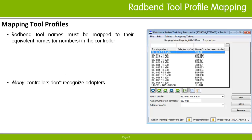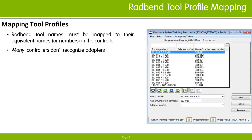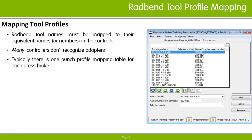It should be noted that many controller models do not recognize adapters. In that case, if a punch is used in combination with an adapter in Radband, you probably need to select a different punch number in the controller — one that is equivalent to the combined punch and adapter. This is because the combination of punch and adapter has different punch properties to the punch on its own, in particular working height. So in the Radband tool database, adapter profiles are often assigned to the punch or die profiles they will be used with.